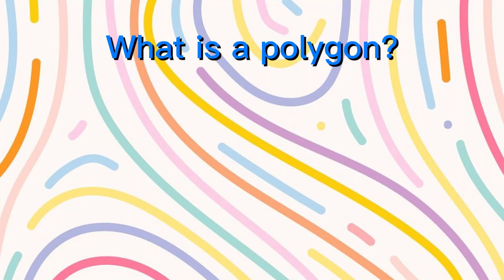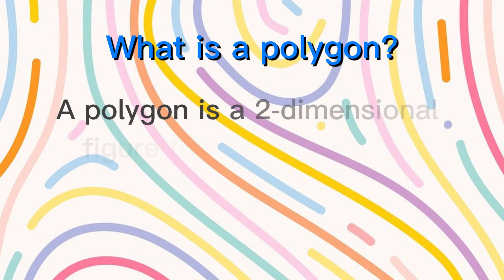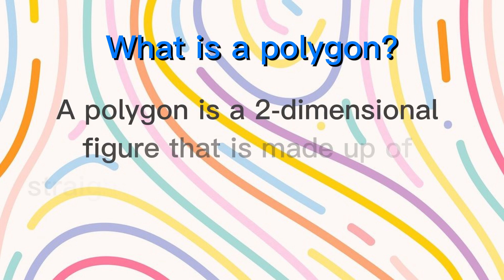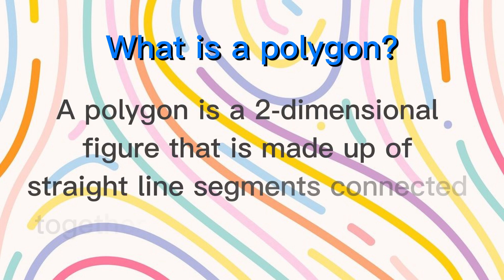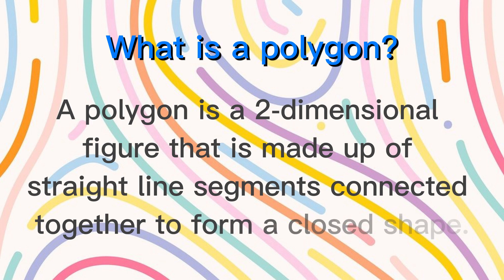What is a polygon? A polygon is a two-dimensional figure that is made up of straight-line segments connected together to form a closed shape.